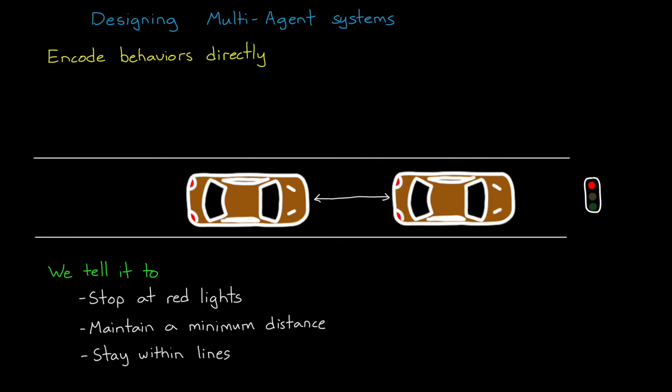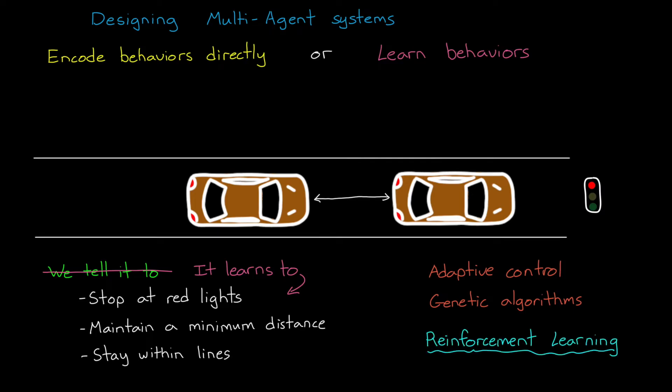However, in contrast to explicitly encoding behaviors, we could also give the agent the ability to learn some, or all, of its behaviors on its own. And there are many different types of learning algorithms, like, for example, adaptive control and genetic algorithms. But for this video, we're going to be talking about reinforcement learning.